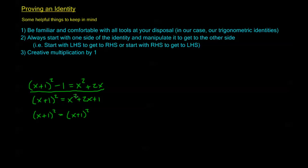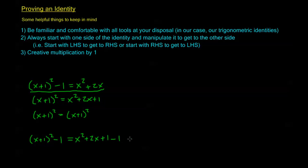Doing something like that can provide some help to see the steps you'd want to take, but if we want to do this problem correctly we need to start with x plus 1 squared minus 1 as an expression, just all by itself. I'm going to manipulate this expression to get it to the point where it equals the right hand side. I know I can expand x plus 1 squared: that's x squared plus 2x plus 1, and I still have this minus 1. The plus 1 and minus 1 cancel and I get x squared plus 2x. Now I've shown that x plus 1 squared minus 1 equals x squared plus 2x without having to assume that statement to begin with.